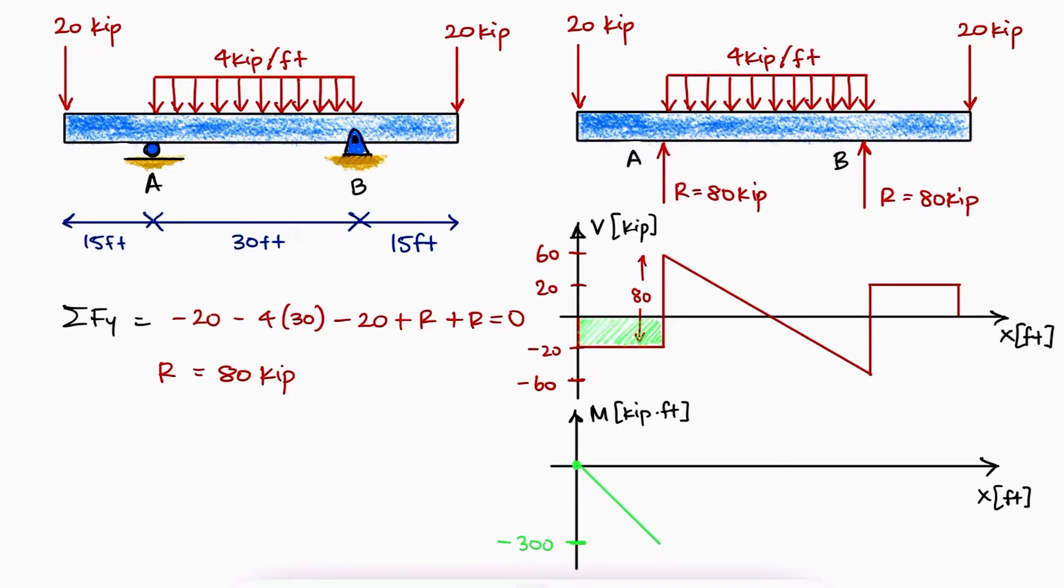From A to B, it will begin with a slope of 60, reach a slope of 0 that we don't yet know if it's below or above the x-axis, and end with a slope of minus 60 at B.